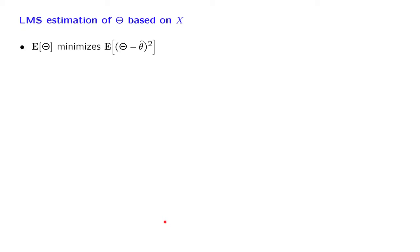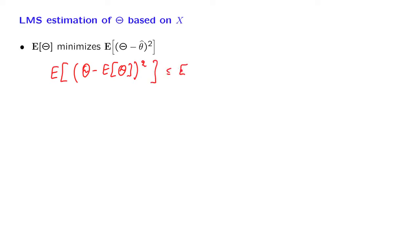Let us now continue with some observations. Remember that the expected value of theta minimizes this quantity, and we can write this more explicitly in terms of the following inequality: if we use the expected value as an estimate, the resulting mean squared error is less than or equal to the mean squared error that we would have obtained if we had used any other estimate c. So this relation is true for all c.